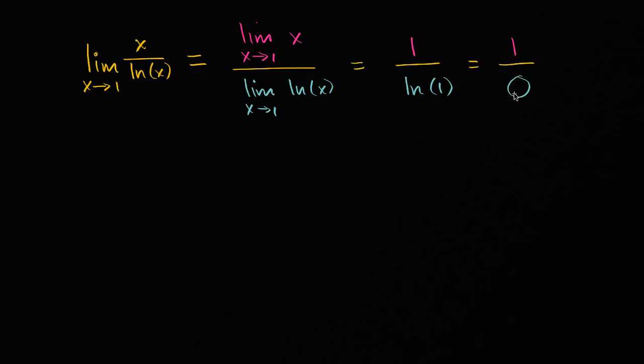But one over zero, this is undefined, which tells us that this limit does not exist. So it does not exist. And we are done.